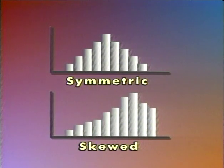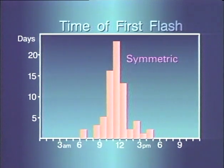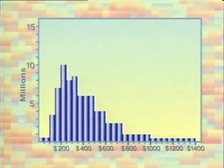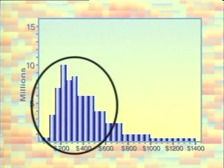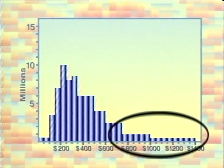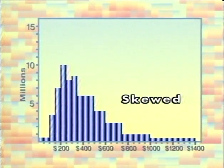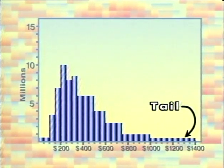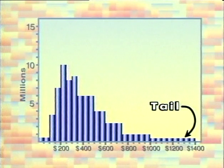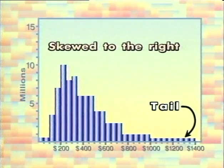Two important types of overall pattern are symmetric and skewed. The histogram of the time of first lightning flashes was approximately symmetric. Here's a histogram that's clearly not symmetric — it shows the weekly wages of all workers. Most people earn modest incomes, while a few people are millionaires. When a histogram is lopsided like this, we say it is skewed in a particular direction. The thin end of a skewed distribution is called the tail. Since the tail of the income histogram is on the right, we say it is skewed to the right.